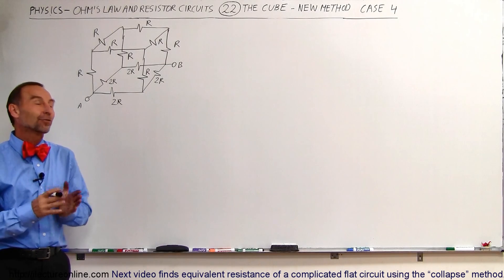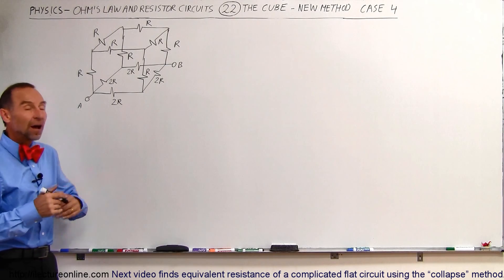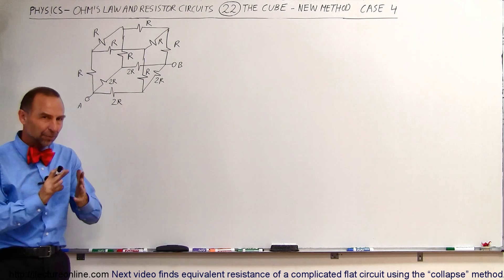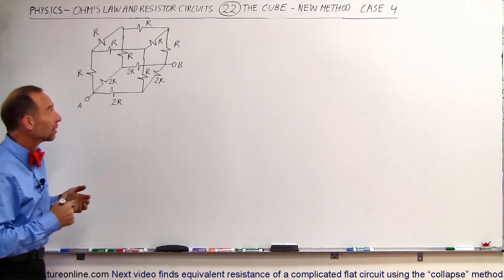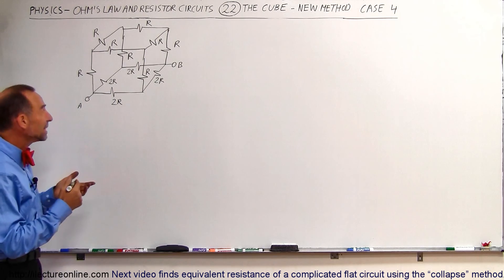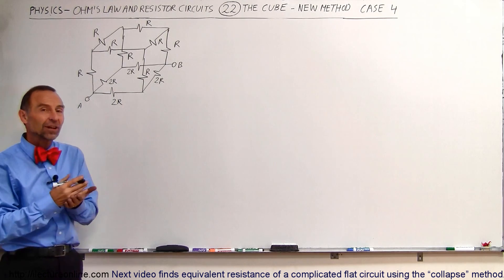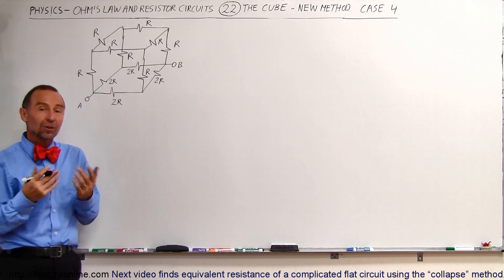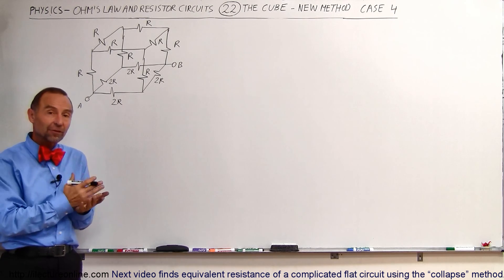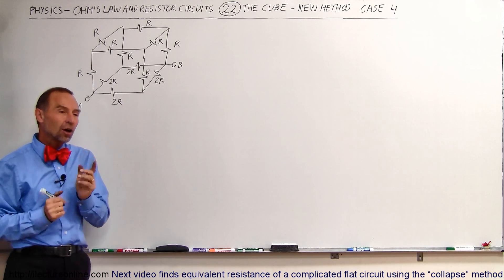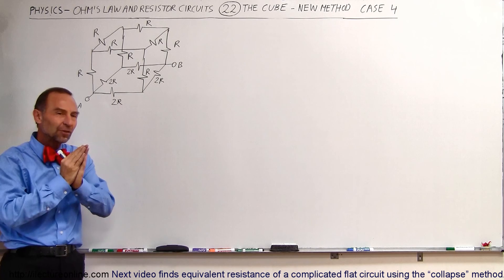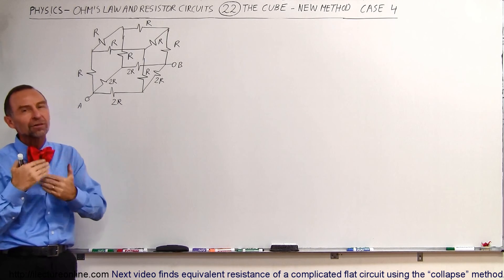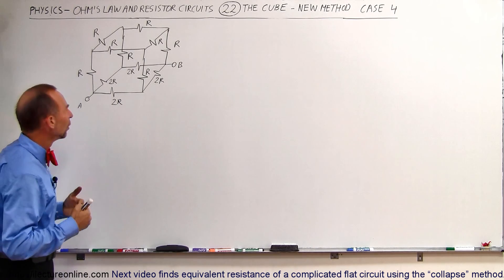Welcome to ElectronLine. Here's a fourth example of how we solve the cube method by collapsing the cube. Not every resistor has to have the exact same value — some resistors can have different values. As long as the two that are being collapsed on top of each other have the same value, otherwise you don't have that perfect symmetry in the cube.